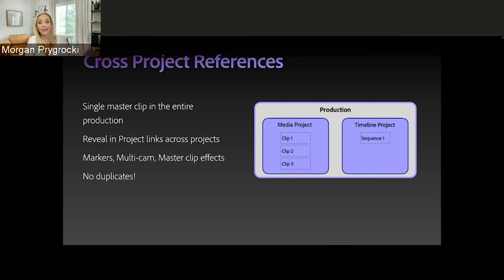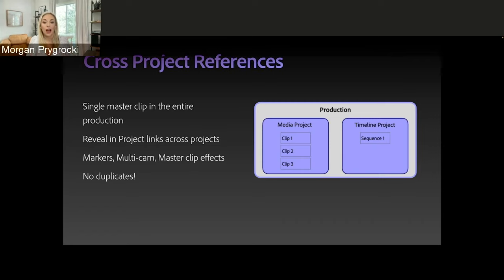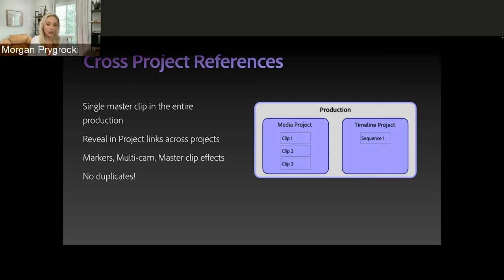Lastly, something to be aware of with Productions is the concept of each project being able to reference other projects — we call this cross-project referencing. If you can imagine two projects, a media project and a timeline project: as you edit clips into that sequence, you're no longer going to get a copy of the clip landing into that timeline project. That was one of the biggest pieces of feedback from our top editors, as it created confusion over which clips were the true clips that everybody else was using. In essence, because of cross-project referencing, using Productions will definitely save you some headaches with duplicate clips.